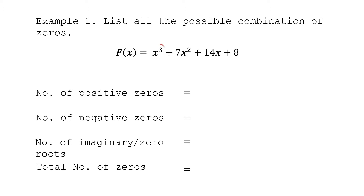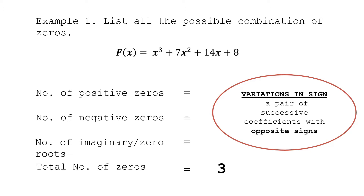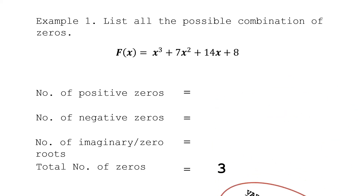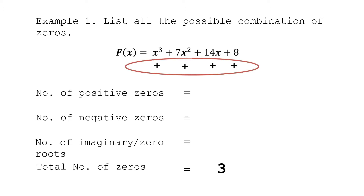Since the highest exponent is 3, or the degree of this function is 3, the total number of zeros is equal to 3. To identify variations in sign, note that your polynomial function must be arranged in decreasing power of x, regardless of missing terms. For f(x) = x³ + 7x² + 14x + 8, the sign of x³ is positive, 7x² is positive, 14x is positive, and 8 is also positive.